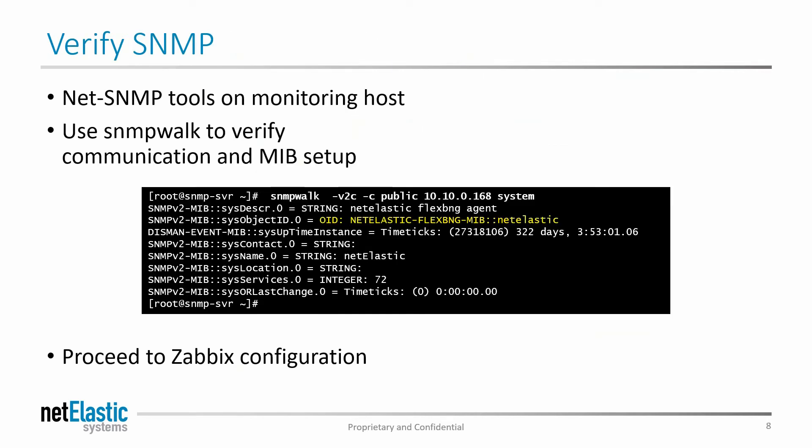Once you've configured it, you want to go back to your management host and just make sure everything's working. The easiest way to do that is with the Linux Net-SNMP tools from the monitoring host in the CLI environment. You can just use a simple SNMP walk command to verify that you can communicate with the Netelastic router and that you're getting the proper MIB information back. Here's a sample output of just doing an SNMP walk on the system level — just the highest level. On that second line, you can see that it's reporting back the descriptive name of the Netelastic MIB, so you know you have everything installed correctly. From there, you could do an SNMP walk against the entire enterprise MIB and browse through it to see what interesting OIDs may be present and might be useful for you to monitor.